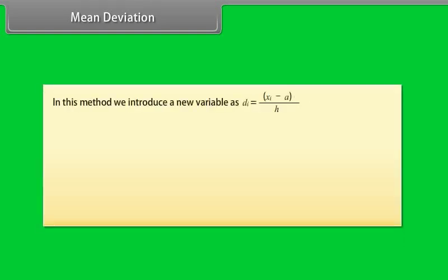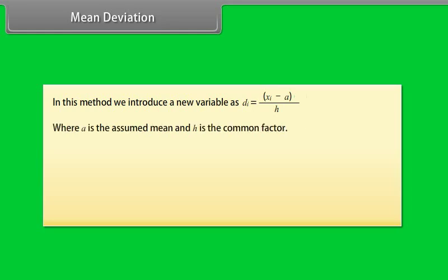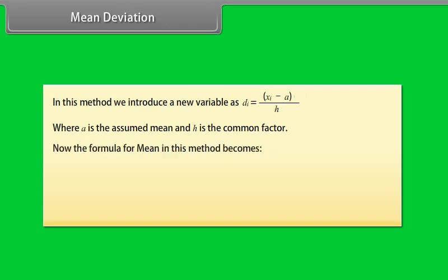We can calculate mean deviation about mean using a shortcut method. In this method we introduce a new variable Dᵢ = (Xᵢ − A) / H, where A is the assumed mean and H is the common factor. The formula for the mean becomes: A + [summation from i=1 to N of (Fᵢ × Dᵢ) divided by N] × H.